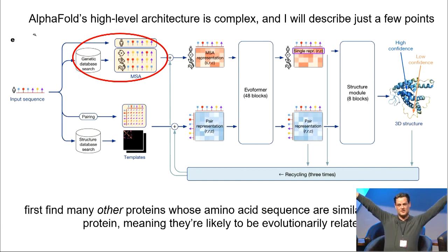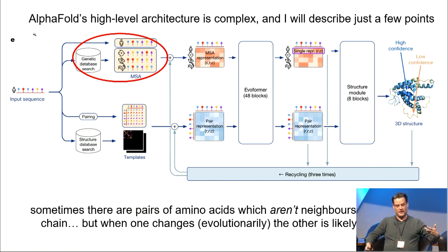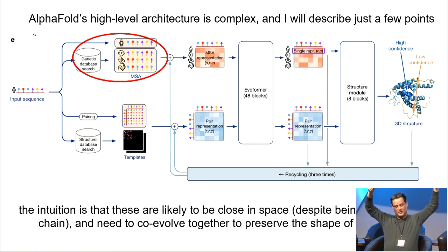It's to say, all right, we've got this sequence. Let's look for other similar proteins, which maybe it's the same protein, but in a different species. So a few of the amino acids have maybe changed, but there's a lot of overlap. And so they construct these very large sequence alignments, and they look for correlated changes in the amino acids. So if there are two amino acids, which are very distant from one another in the chain, but they seem to change together in a correlated way, the intuition is that they're likely to be evolutionarily-related. The intuition is that these are likely to be close in space, despite being distant in the chain, and they need to co-evolve together to preserve the shape and the function of the protein. That's just an intuition. It's not necessarily a fact, but it turns out that using that idea really significantly improves the results.